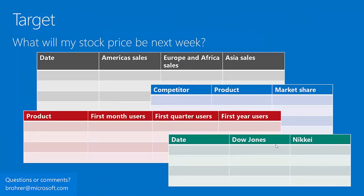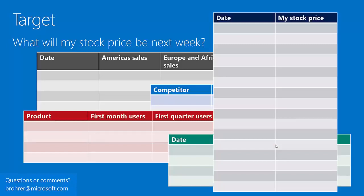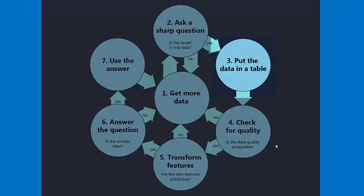You need to make sure your data includes your target. Your target is an example of answers to your question that came in the past. If your question is, 'What will my stock price be next week?' your target is a history of stock prices. You can gather sales information by region, competitor product info, user information, and external market data — but none of that will help until you also have a history of your stock price to line it up with and find the patterns. If you don't have your target in the data, go get more data.